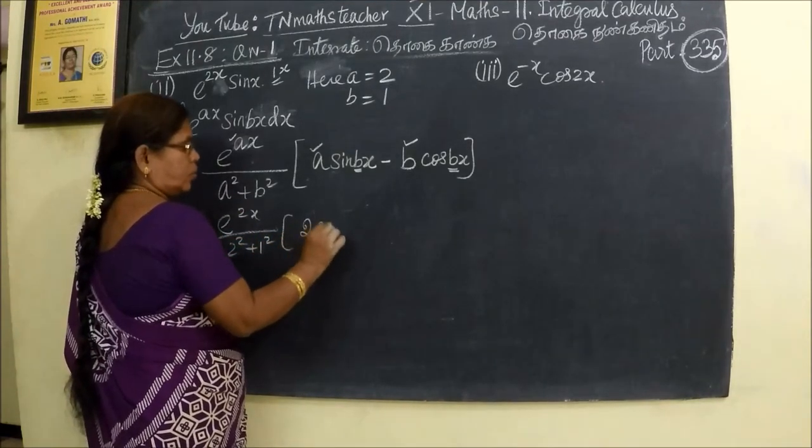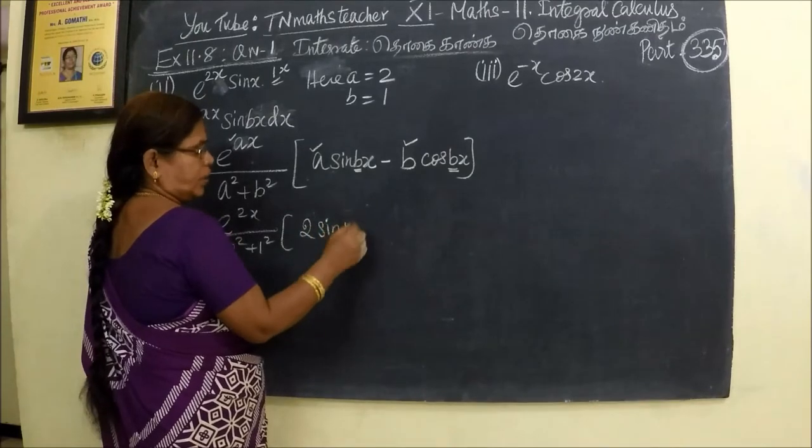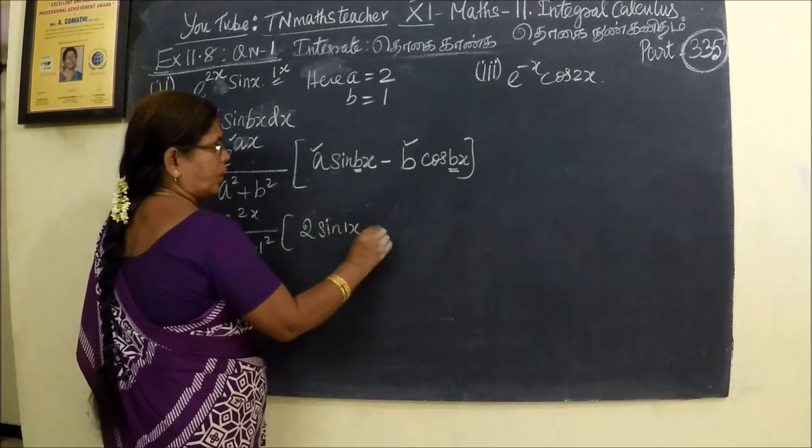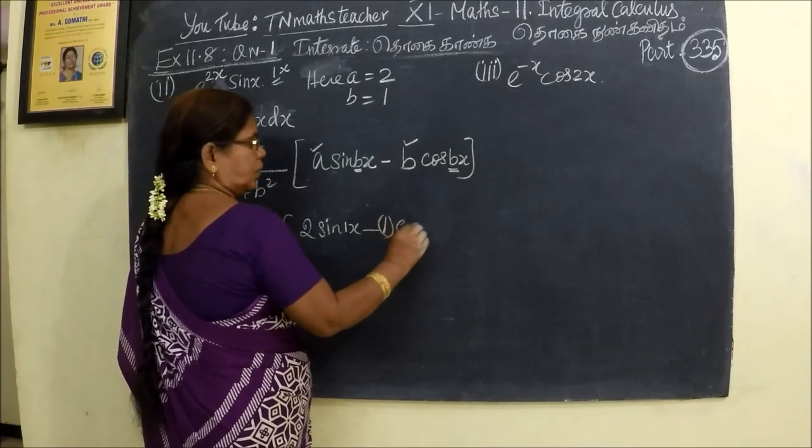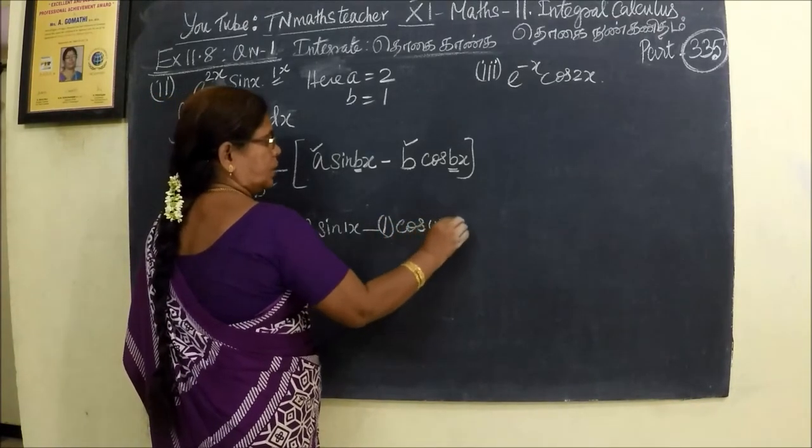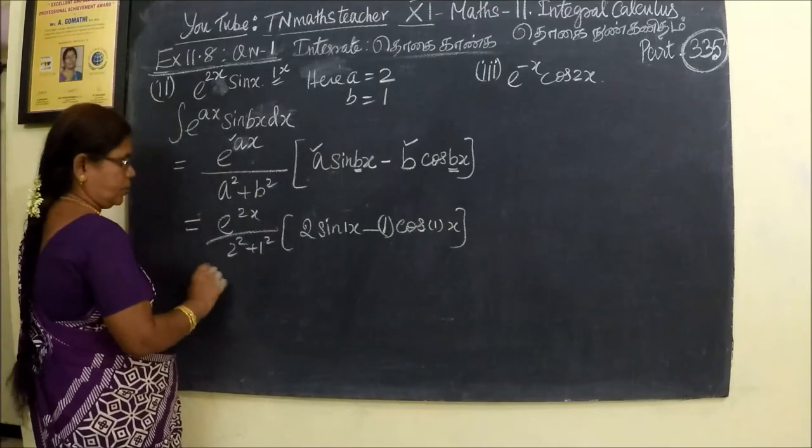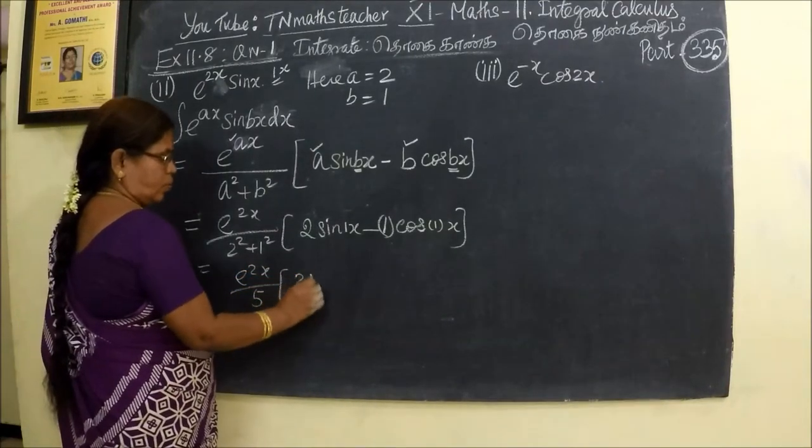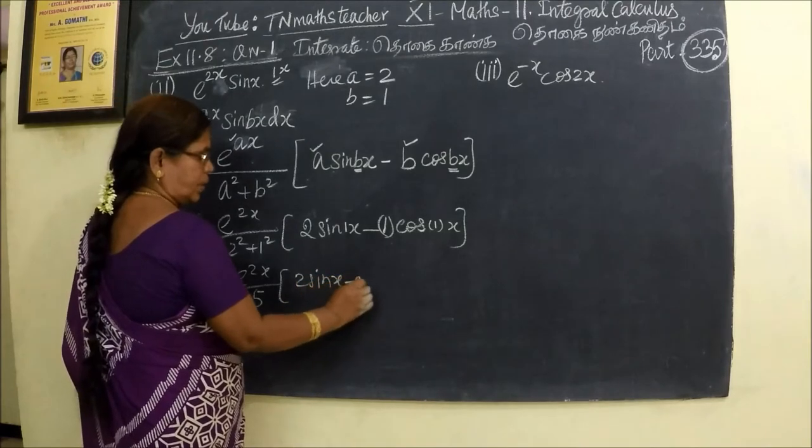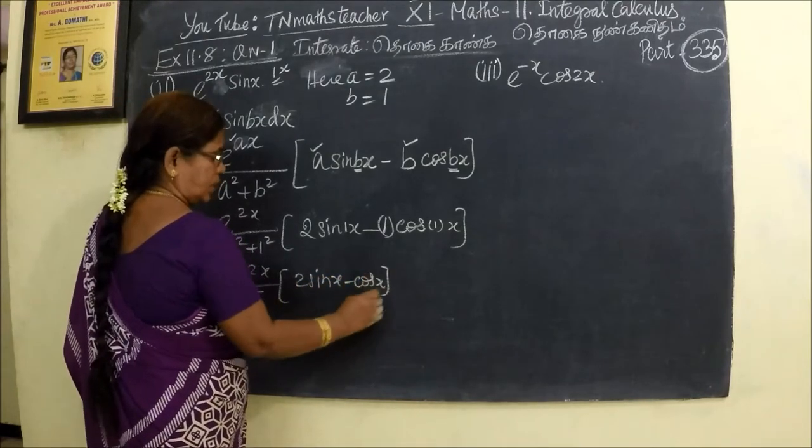Then a equals 2 sin, b equals 1. Actually no need to write. Minus instead of b, 1. Then cos bx. So that is equal to e power 2x, then 5, 2 sin x minus cos x.